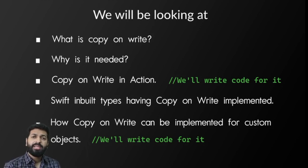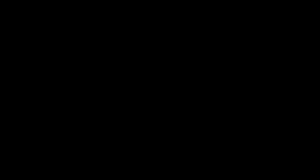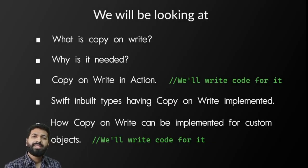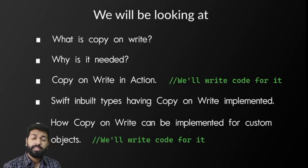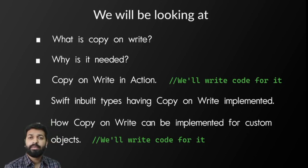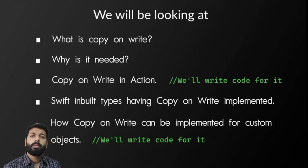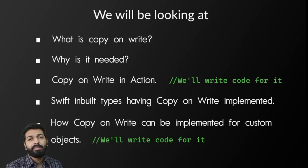Let's understand what is copy-on-write. Copy-on-write simply says that if two variables are supposed to hold exactly the same values, then both of them should be pointing at the same object unless mutation is needed.